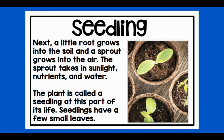Seedling. Next, a little root grows into the soil and a sprout grows into the air. The sprout takes in sunlight, nutrients, and water. The plant is called a seedling at this part of its life. Seedlings have a few small leaves.